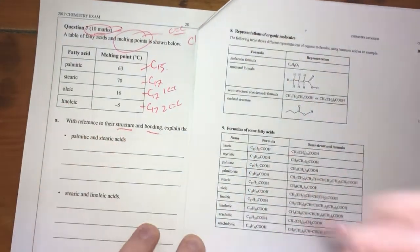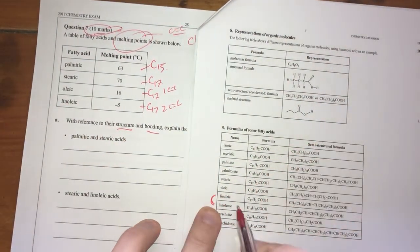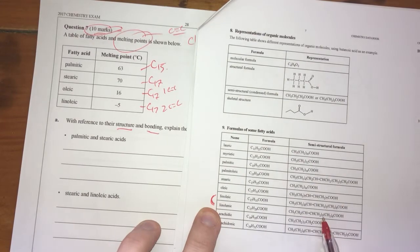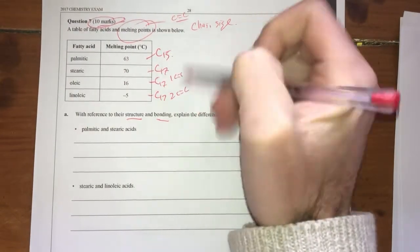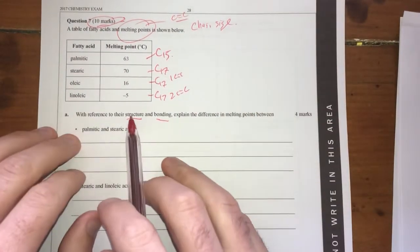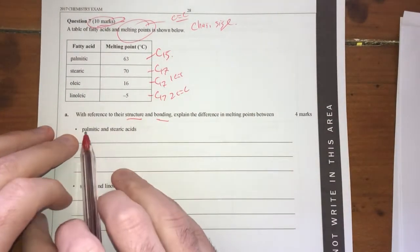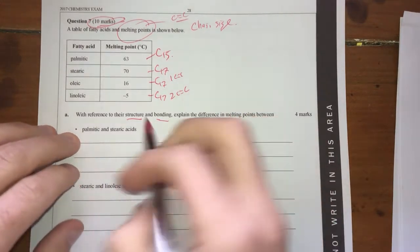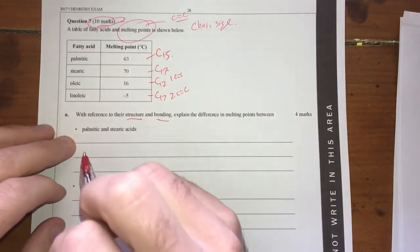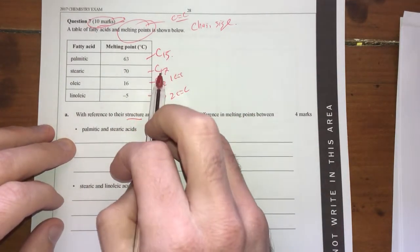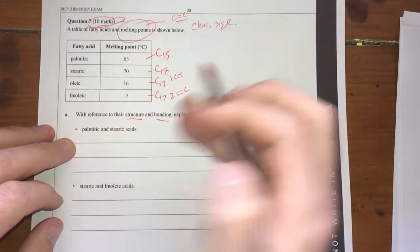I've got to be really careful with these two here. They look very similar. One's got two double bonds, one's got three double bonds. So now we have the data here, which is the bonding and structure basically. Just looking at this, you can see stearic acid has a higher melting point than palmitic acid. That's due to the fact that palmitic acid is shorter.